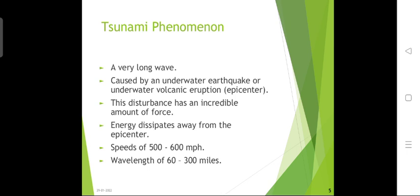The tsunami phenomena: a tsunami is generated by the gravitational pull of the moon and the sun, and also by the displacement of water by a large event such as an underwater earthquake or underwater volcanic eruption. Energy radiates outward from the epicenter. The tsunami phenomena has an approximate speed of 500 to 600 mph.